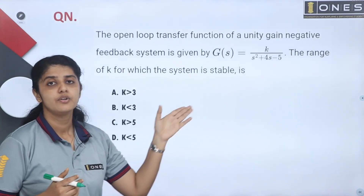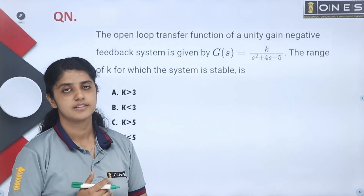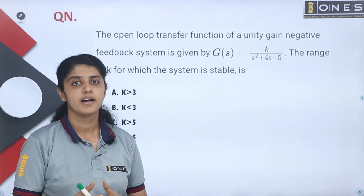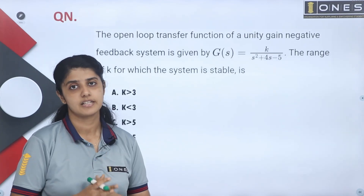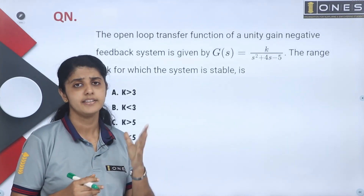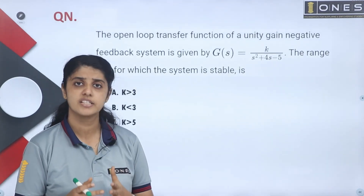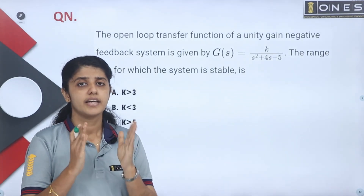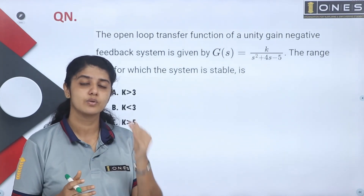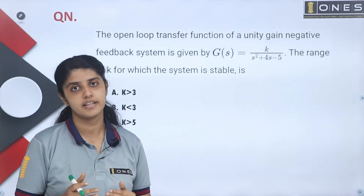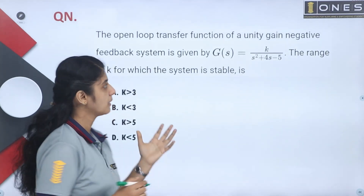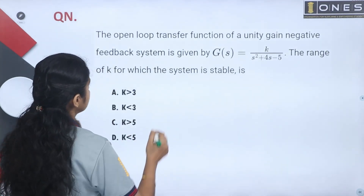There is a function, G(s), and this system is stable — we need to find the condition. How do we do it? Here is the characteristic equation. Let's check the characteristic equation from Routh-Hurwitz criteria.